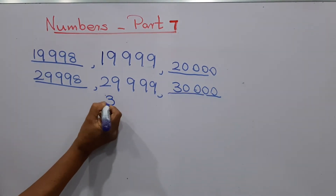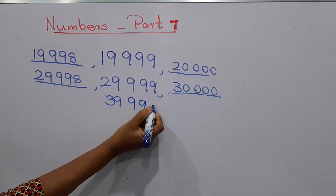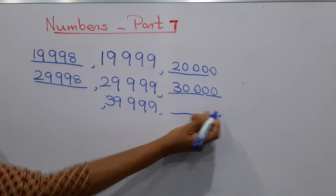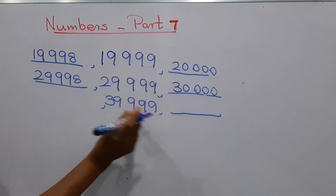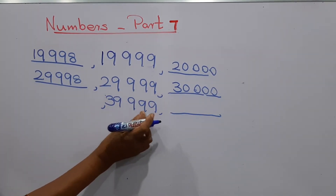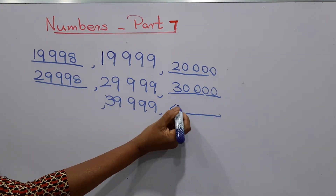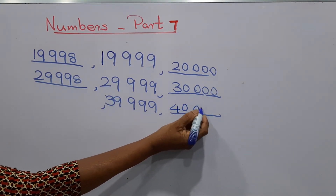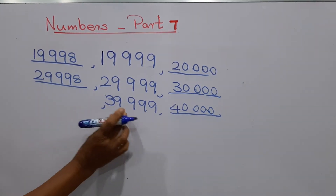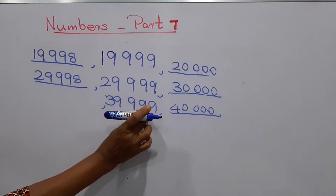The next number is 39,999. What is the number after 39,999? When you add 1, it becomes 40,000. What will be the number before 39,999? That is 39,998.